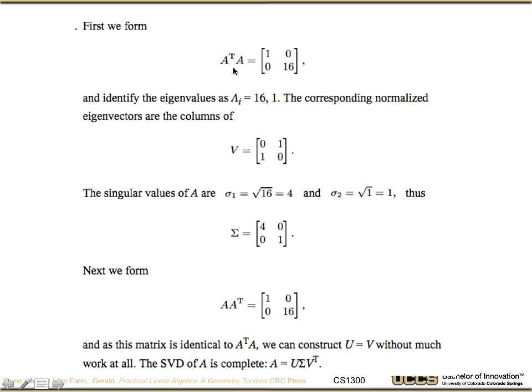Given that we know the relationship between the eigenvectors, we can first form A transpose A. That gives us [1, 0; 0, 16]. As a diagonal matrix, the eigenvalues are trivial, 16 and 1, and the corresponding eigenvectors are [0, 1] and [1, 0].